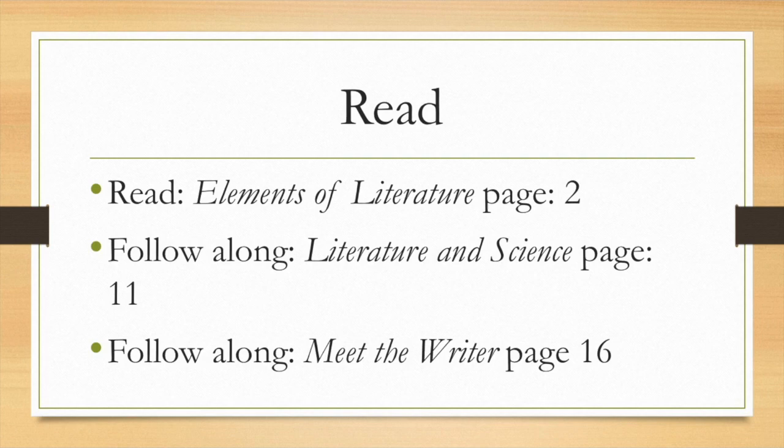Although he later lived in many places around the world, including Brattleboro, Vermont, India always remained close to his heart. You can read more of Kipling's animal stories in Just So Stories and The Jungle Book. The Jungle Book is about a boy named Mowgli who was raised by wolves. Kim, Kipling's best-known novel, traces the adventures of an Irish orphan who was raised as an Indian and eventually becomes a British spy.